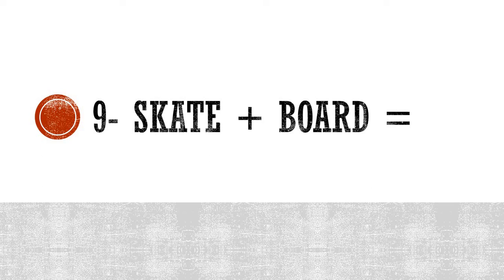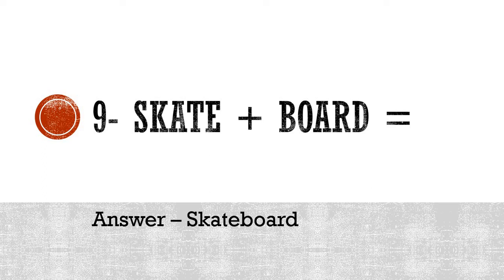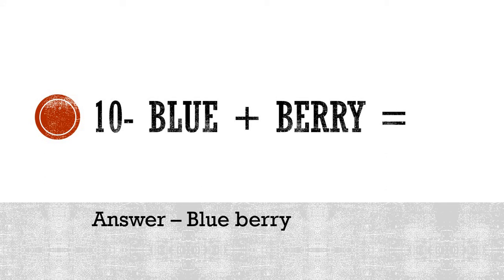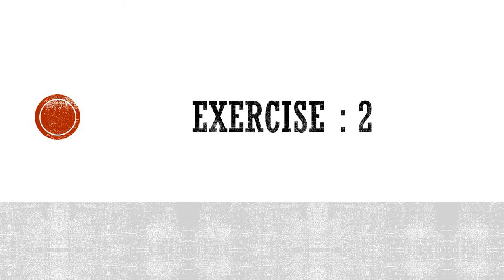Number nine: skate plus board — B-O-A-R-D. Teachers write on the board, and skate means something else. Please write the answer quickly. The correct answer is 'skateboard' — skating is something else, but a skateboard is a big one with wheels as its base. Number ten, the last one for this exercise: blue — B-L-U-E — plus berry — B-E-double-R-Y. Combine these two words and the new word is 'blueberry' — it is also a kind of fruit.